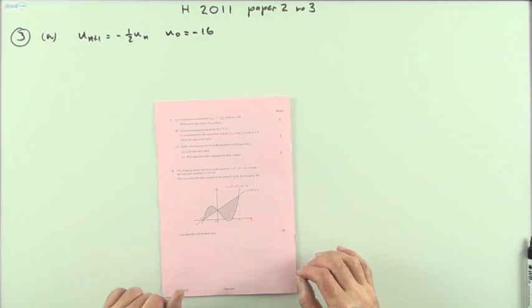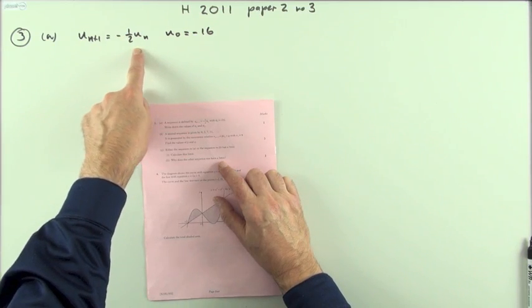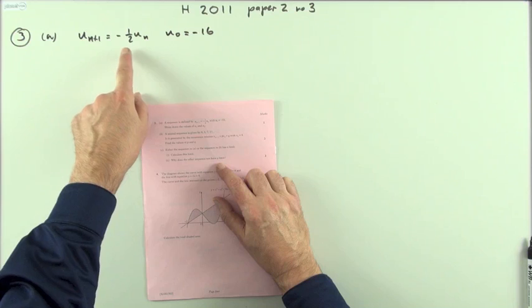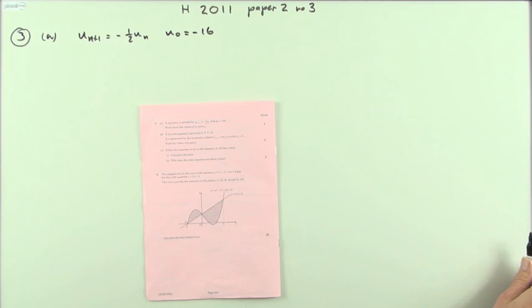So number three from the 2011 Higher. There's a sequence defined by this recurrence relation here. It's got the multiplying part and an initial term, U0, given.